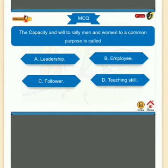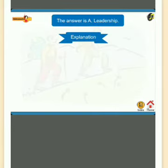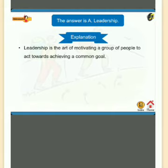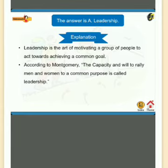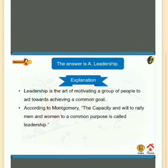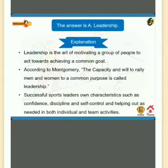Test yourself: The capacity and will to rally men and women to a common purpose is called — A. Leadership, B. Employee, C. Follower, D. Teaching skill. The answer is A. Leadership. According to Montgomery, successful sports leaders own characteristics such as confidence, discipline, self-control, and helping out as needed in both individual and team activities.